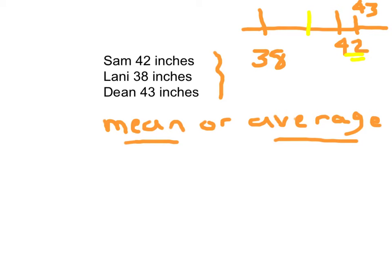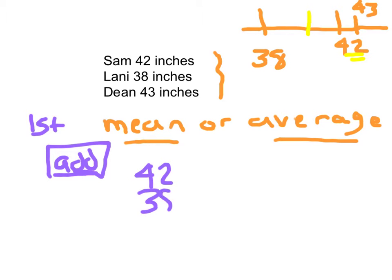Our steps to be able to solve this problem is we add them first, and then we add all of those heights together first. So our first step is to add all of those heights. We have 42, 38, and 43. And again, we said we'd add them.